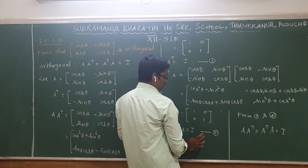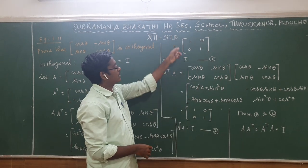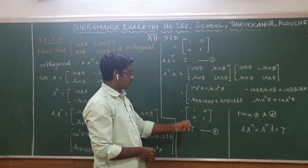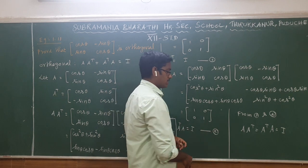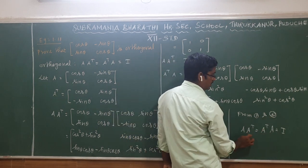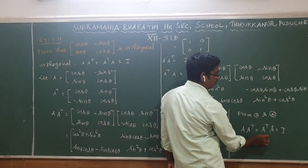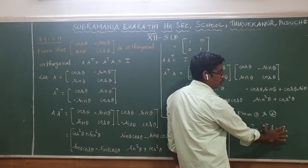From equation 1 and equation 2, we have shown that A·Aᵀ = Aᵀ·A = I, the identity matrix. Therefore, the given matrix is orthogonal.